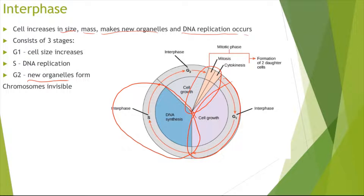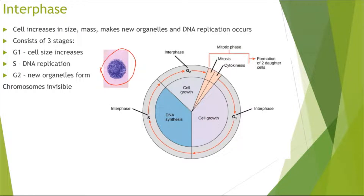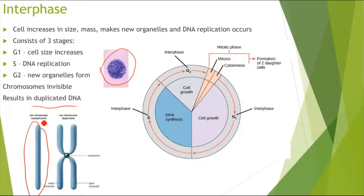In the interphase stage, the chromosomes are invisible. So if a micrograph comes up — and micrographs commonly appear in exam questions — the DNA is all muddled up and not arranged into any kind of chromosomes. If a micrograph like this comes up, you know this is interphase. In interphase we start with a single unduplicated DNA and result in duplicated DNA, with a centromere in the middle attaching the two sister chromatids.